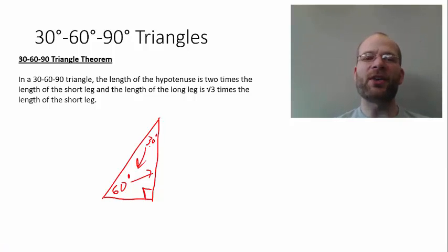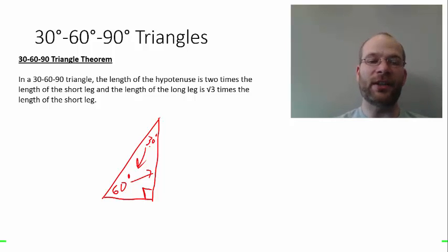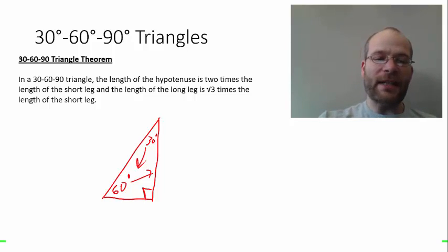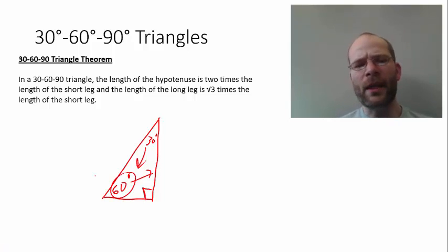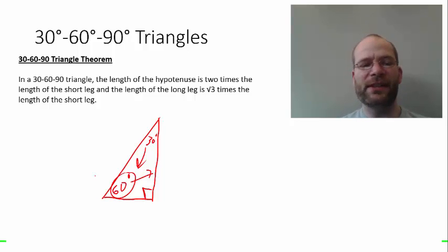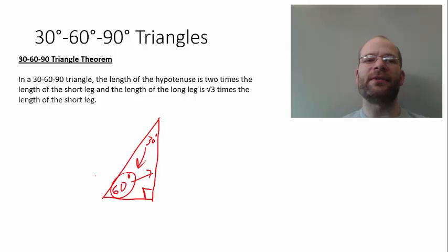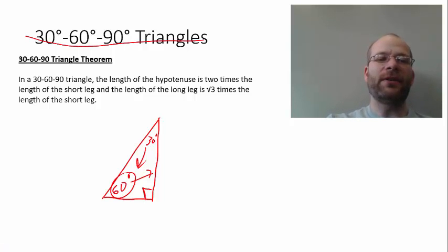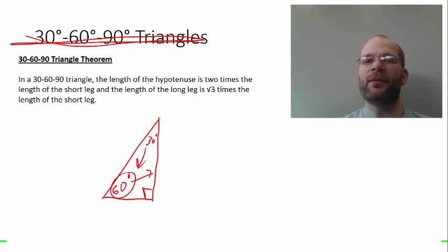Anytime you need to identify the long leg, just find the 60-degree angle. You might ask: what if I don't know where the 60-degree angle is? Well, if you don't know where the 60-degree angle is, then you don't know you're dealing with a 30-60-90 triangle, and it wouldn't be proper to apply this rule anyway.